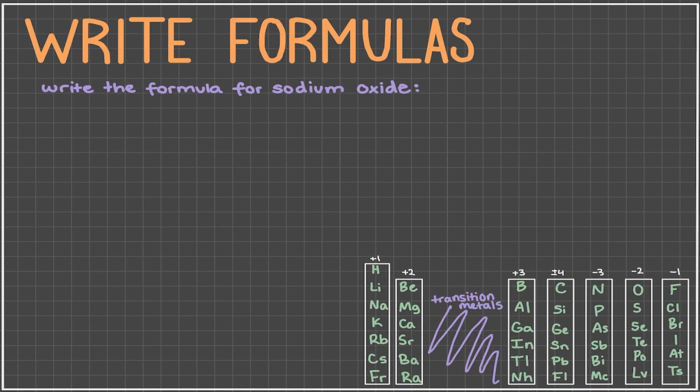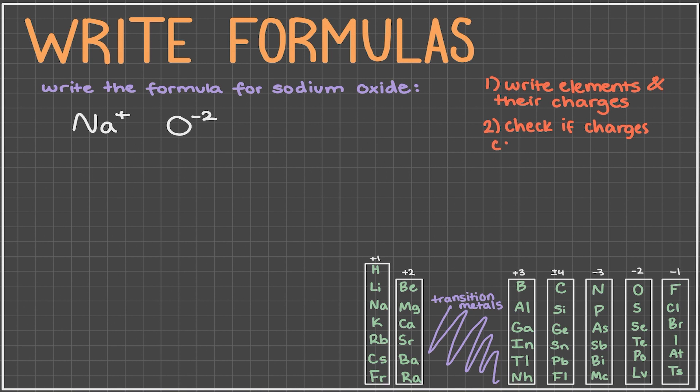Now let's discuss how to write the formula for chemical compounds made out of ions. Say we want to write the formula for sodium oxide. First, write out the elements and their charges. Sodium is Na, and it has a 1 plus charge on the periodic table. Oxygen is represented by O, and it has a 2 minus charge. The next step is to check if charges cancel out. In other words, do the charges sum to 0? Well, they don't in this example, so we need to make them cancel out by adjusting the number of atoms in this compound.